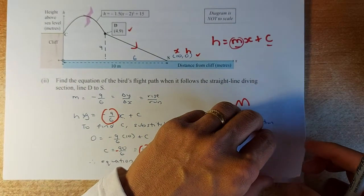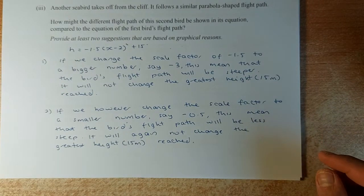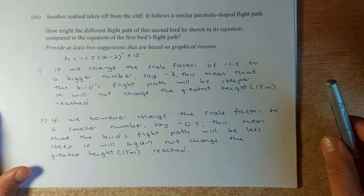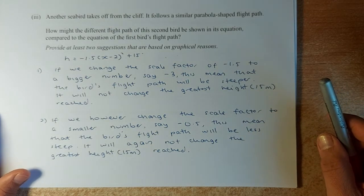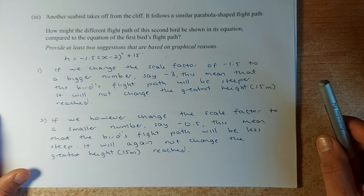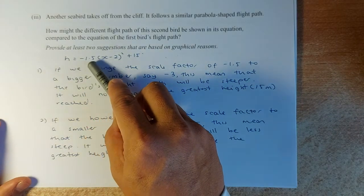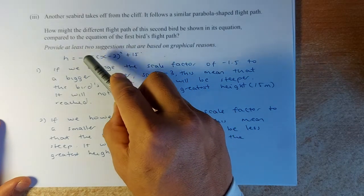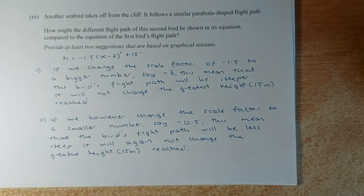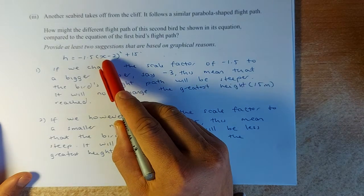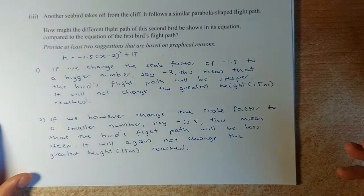Now we are going to do some understanding. The question says: Another seabird takes off from the cliff. It follows a similar parabola shaped flight path. How might the different flight path of the second bird be shown in the equation compared to the equation of the first bird's flight, which is h equals -1.5(x-2)² + 15? We can change the 15, change the x, or change the scale factor of 1.5. In this case, I'm just going to talk about the scale factor. If you want more details about changing the x value or the 2 or the 15, go to the marking schedule.